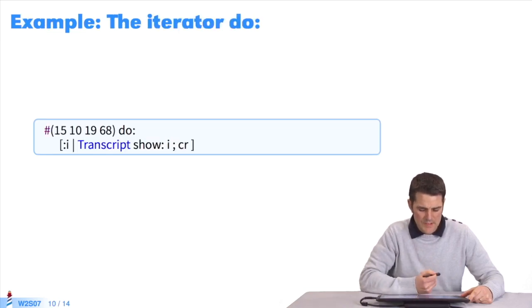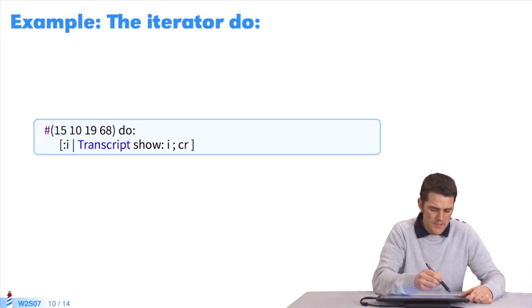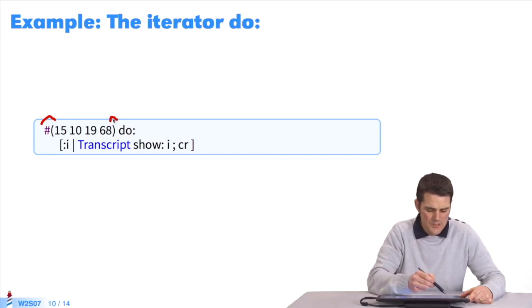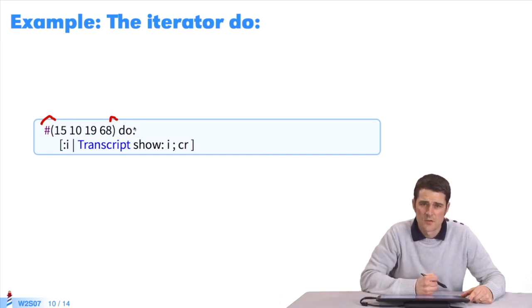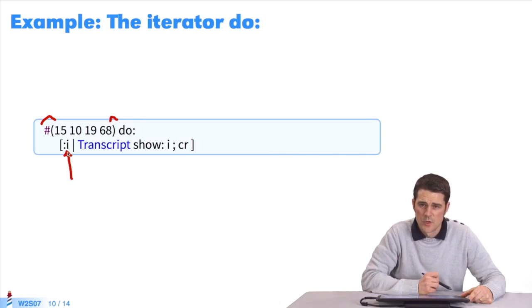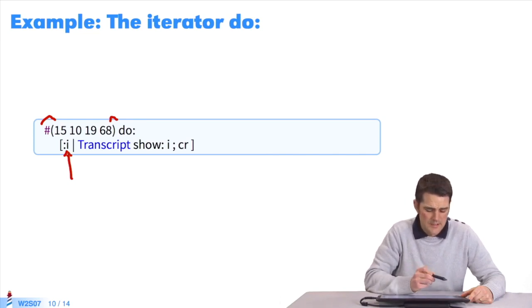This is an example. It's a defined collection. A reminder of the syntax, open with hashtag, open parentheses, and close with close parentheses for literal collections. This collection contains 4 integers, 15, 10, 19, and 68. You send the message do to the collection and pass it a block. I, the parameter of the block, takes the value 15 on the first loop, then 10, 19, and 68.